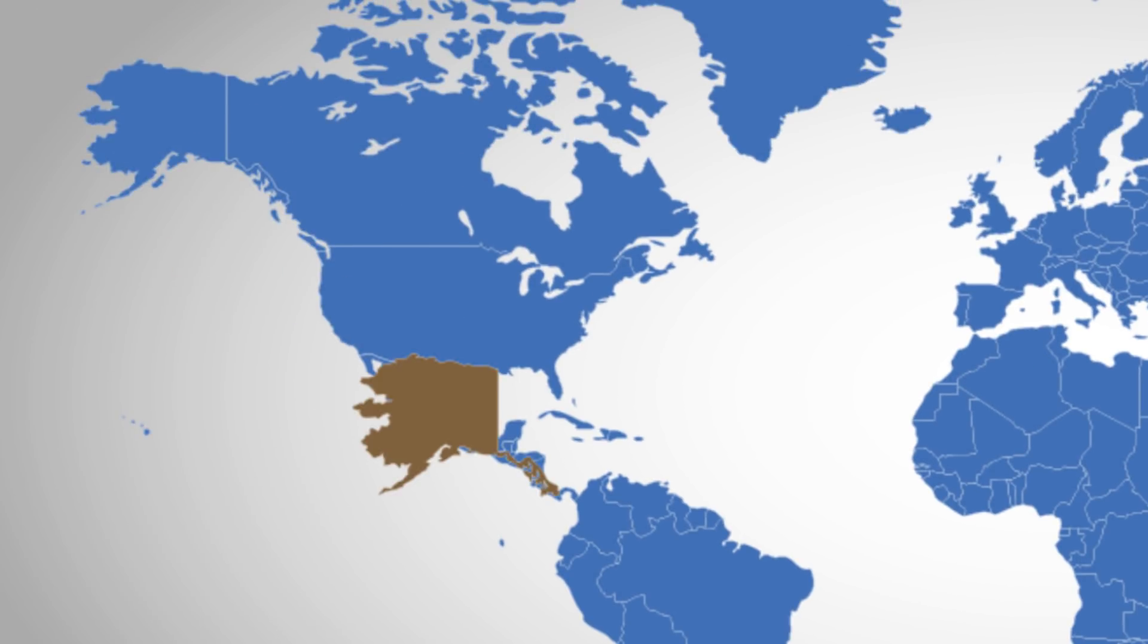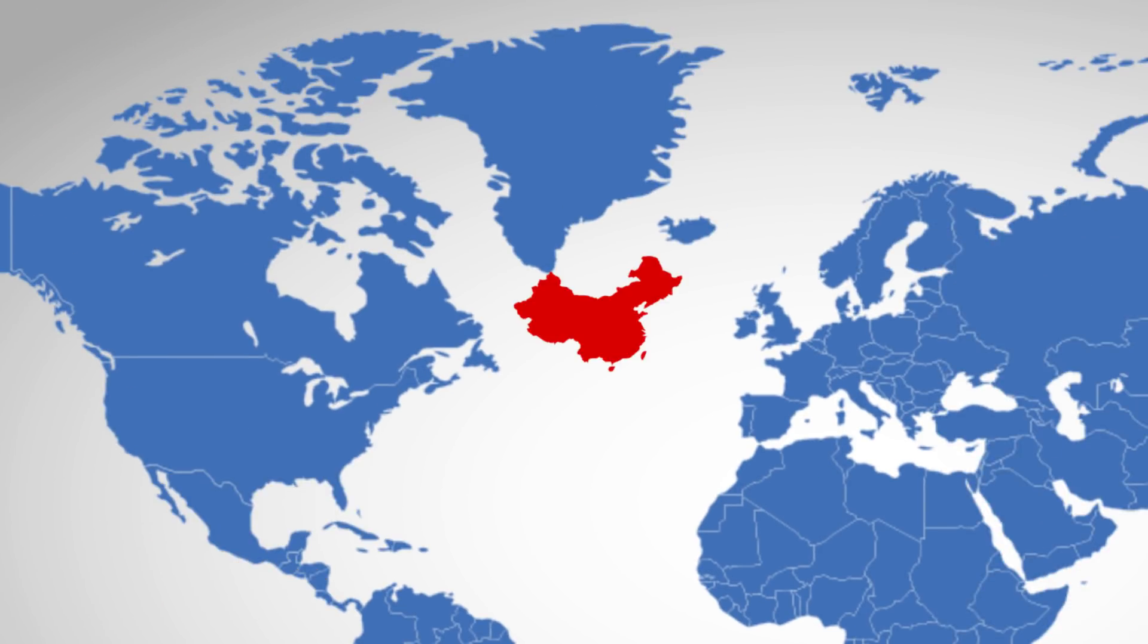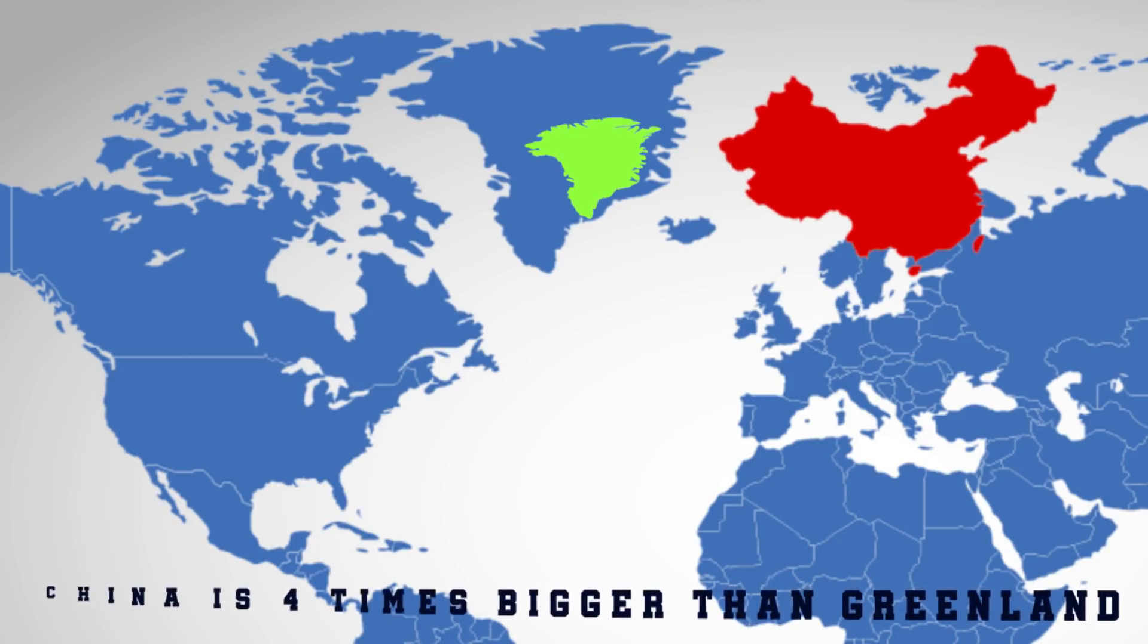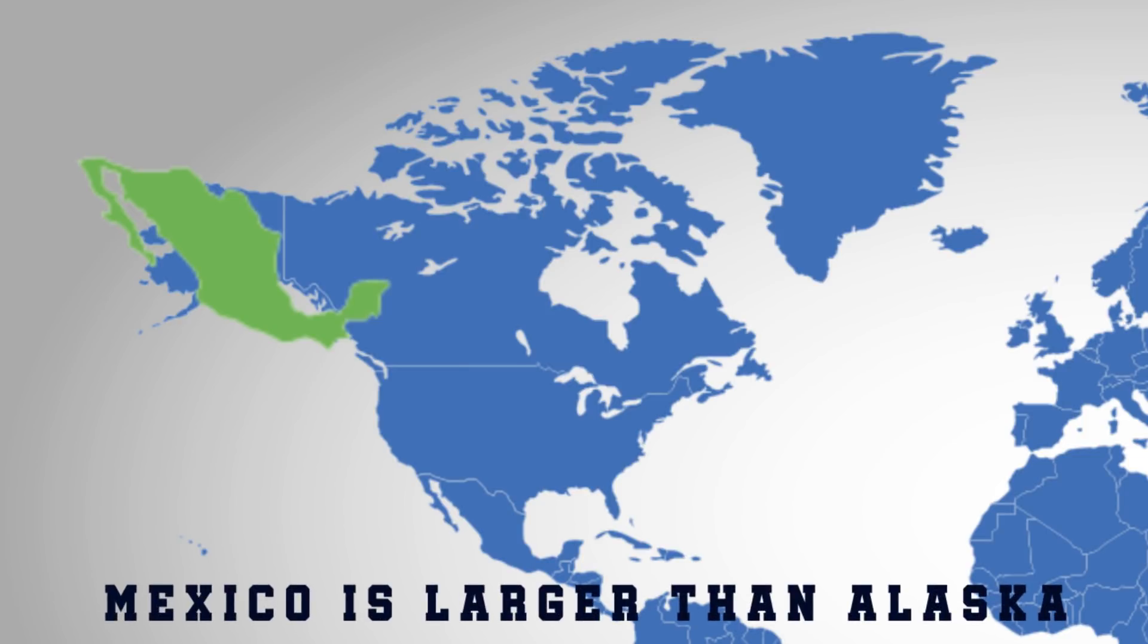Also on this map, Alaska appears larger than Mexico, and China appears smaller than Greenland. But in reality, China is four times bigger than Greenland, and Mexico is larger than Alaska.